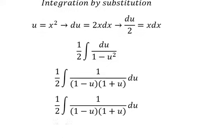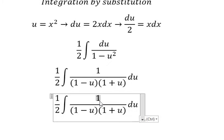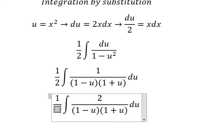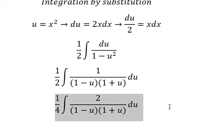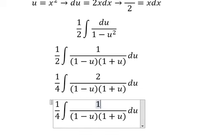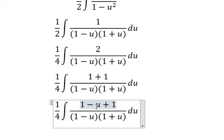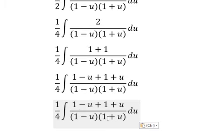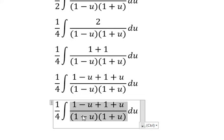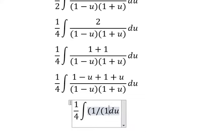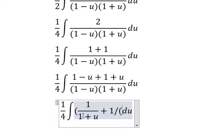So we need to multiply by number 2 on numerator and denominator. Number 2, that is 1 plus 1. Next I will put negative u, later I will put positive u. So 1 minus u divided by 1 minus u, 1 plus u divided by 1 plus u. So we have 1 over 1 plus u plus 1 over 1 minus u.